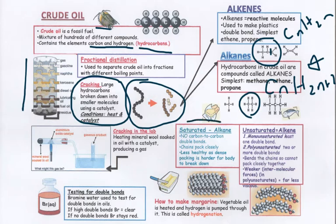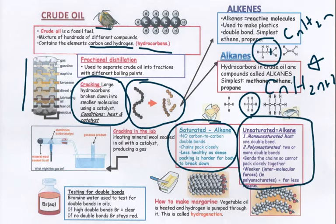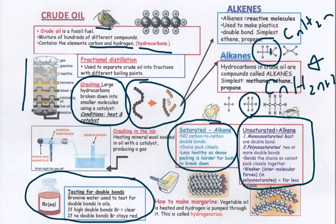Alkanes are called saturated because all the carbon to carbon bonds are single. Alkenes are called unsaturated because they have at least one carbon to carbon double bond present. The test for this double bond is to react with bromine solution. Bromine is brown but if put in the presence of a double bond the bromine molecule will split and add across the double bond, removing the bromine from the solution meaning that it goes clear.